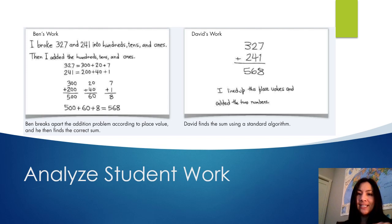All right, we're going to need to analyze some fictional students' work. Sorry, my dog's barking in the background. Okay. So on the left here, we have Ben's work. He explains, I broke 327 and 241 into hundreds, tens, and ones. Then I added the hundreds, tens, and ones.